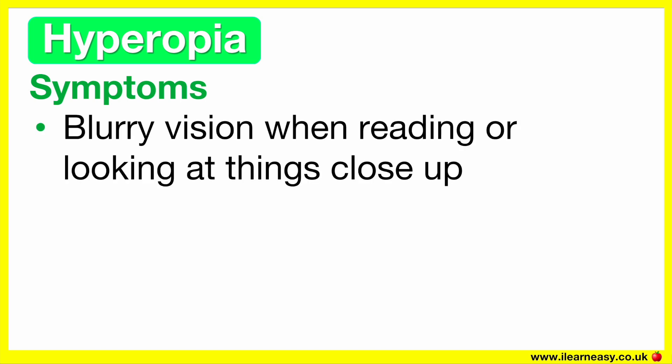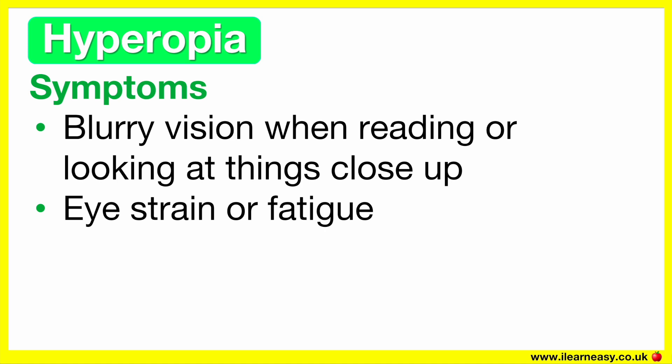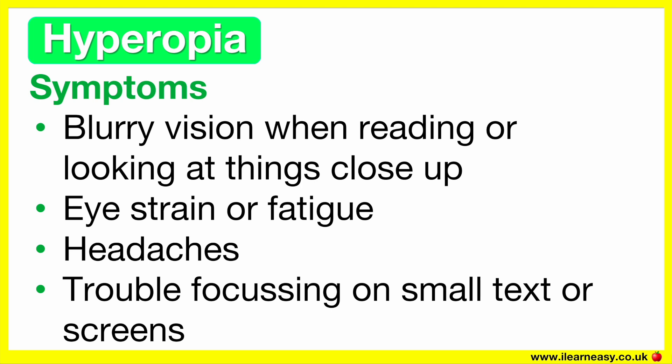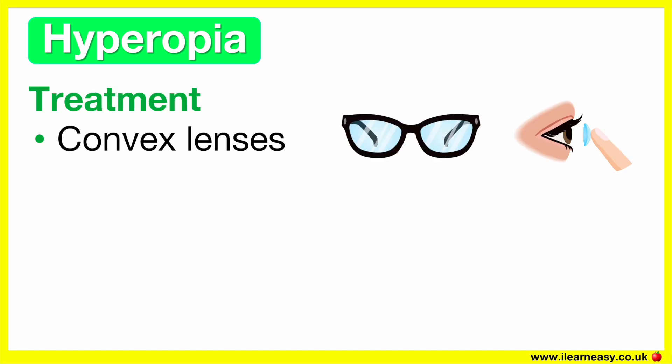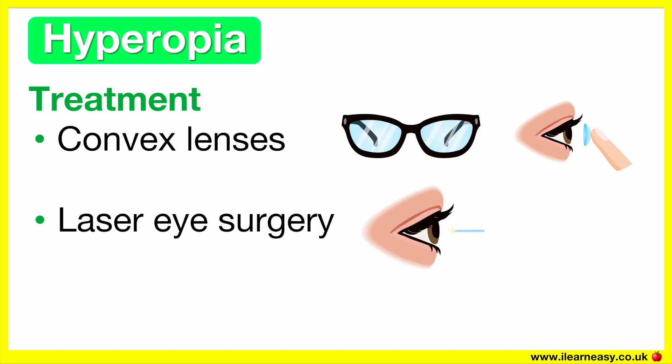The symptoms of hyperopia are blurry vision when reading or looking at things close-up, eye strain or fatigue especially after reading, headaches, and trouble focusing on small texts or screens. The treatment for hyperopia is glasses or contact lenses. The lenses used are convex lenses, also known as plus lenses. Laser eye surgery or other vision correction surgery can also be an option. This reshapes the cornea to fix the way light enters the eye.